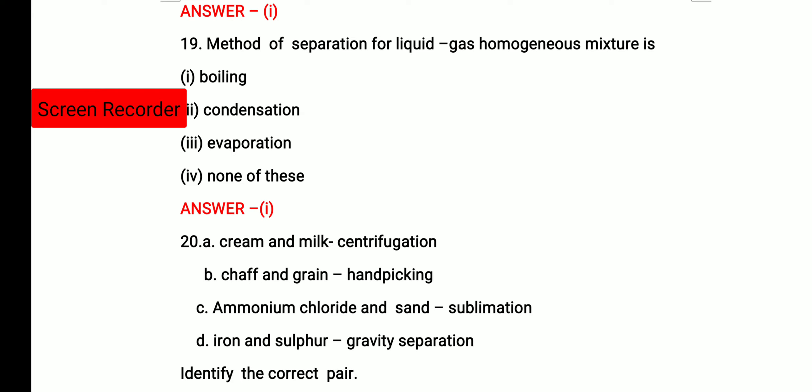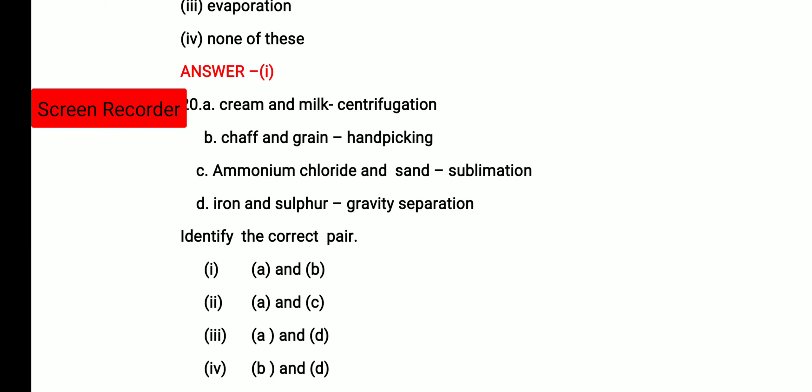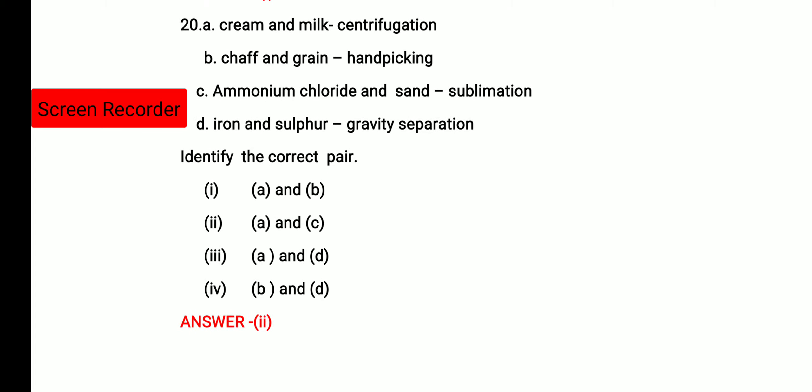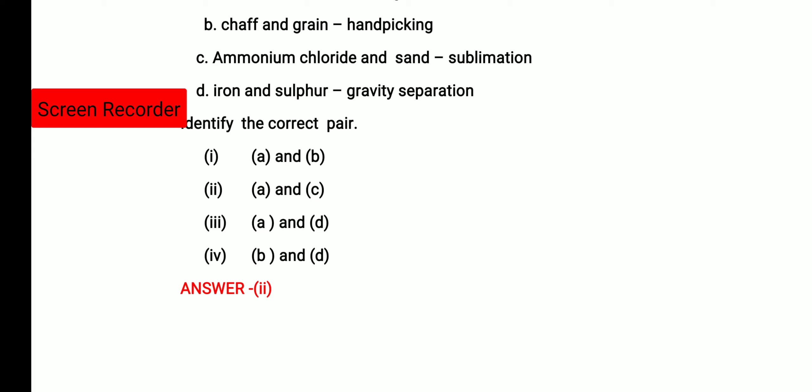Then last question. There is matching given over here. You have to identify the correct pair. Cream and milk by centrifugation. Chaff and grain by hand picking. Ammonium chloride and sand by sublimation. Iron and sulfur by gravity separation. A is the correct pair and C is the correct pair. So option 2 that is A and C. So this is all for today. From the next class, we will continue with the first term portion. I hope you must have performed well in your exams. Thank you everyone.